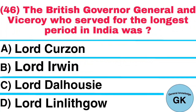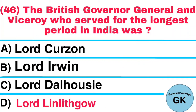Question number 46. The British Governor General and Viceroy who served for the longest period in India was: A. Lord Curzon, B. Lord Irwin, C. Lord Dalhousie, D. Lord Linlithgow. Answer: Lord Linlithgow.